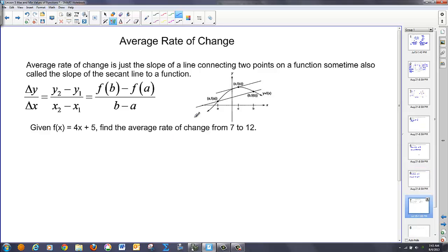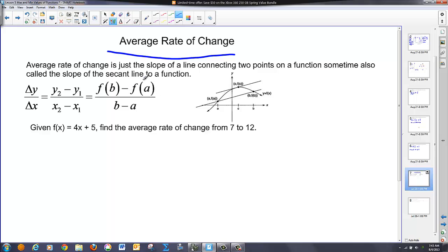Lastly, the book is going to talk about an average rate of change. And the definition of an average rate of change is basically the slope of a line connecting any two points on a function. It's also sometimes called the slope of the secant line to the function. The slope is y2 minus y1 over x2 minus x1. It can also be written as the function's value of the second point minus the function's value of the first point over the first point minus the second point, or delta y over delta x. So, given a function like this, where I have 4x plus 5, I want to find the average rate of change from 7 to 12.